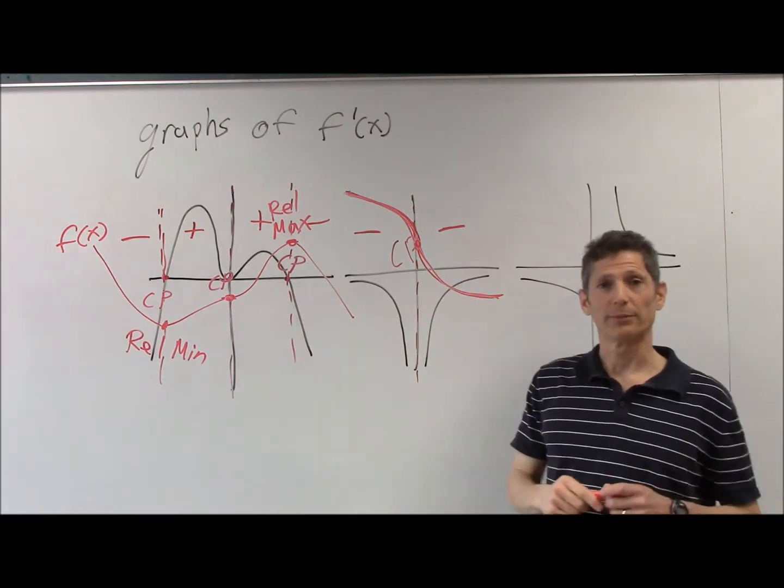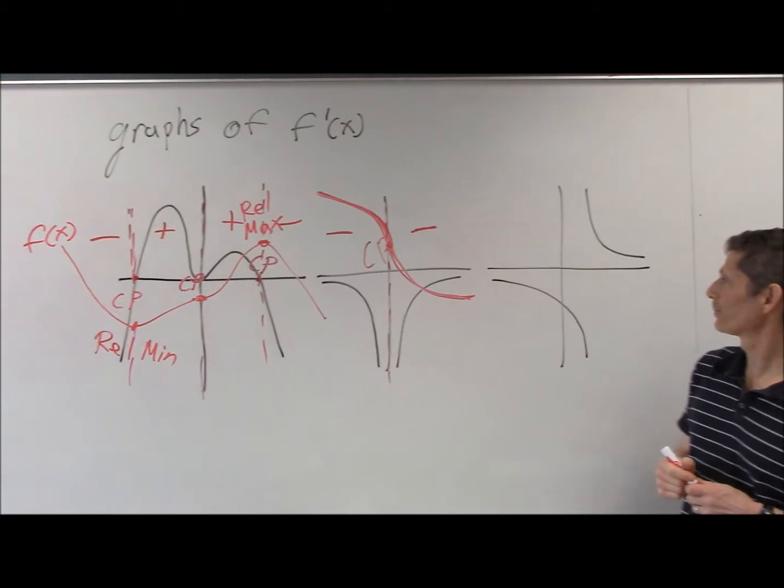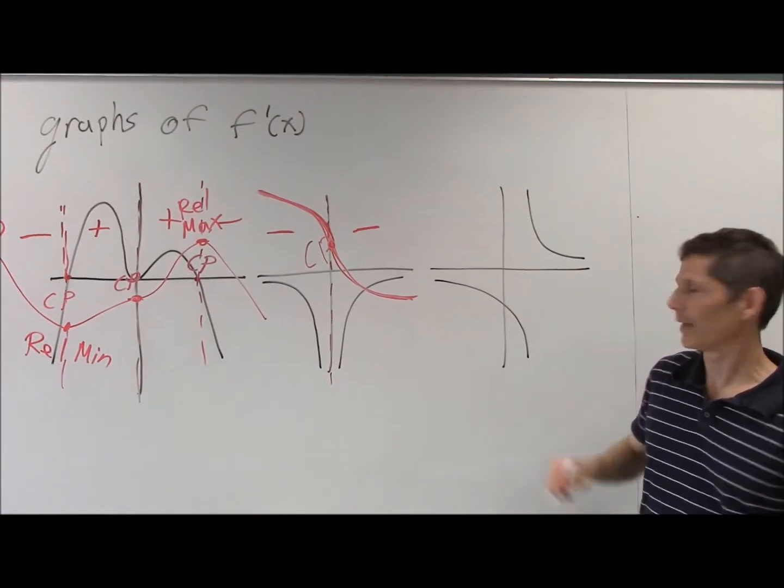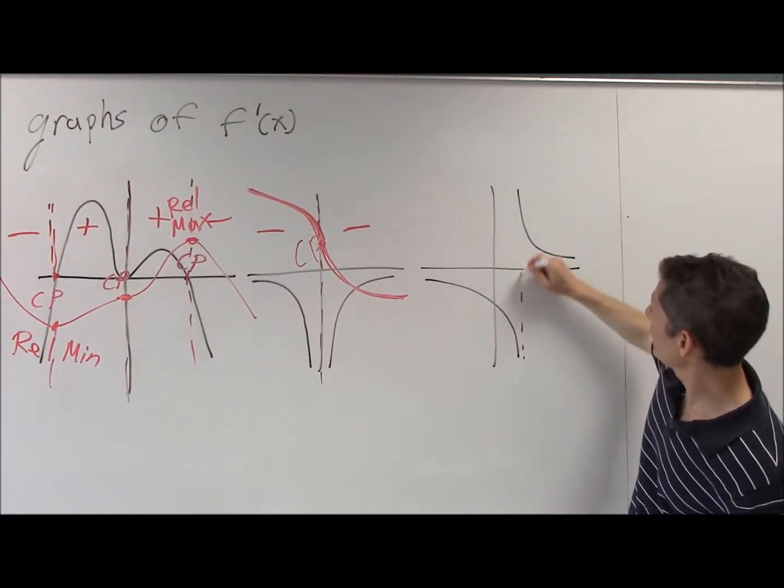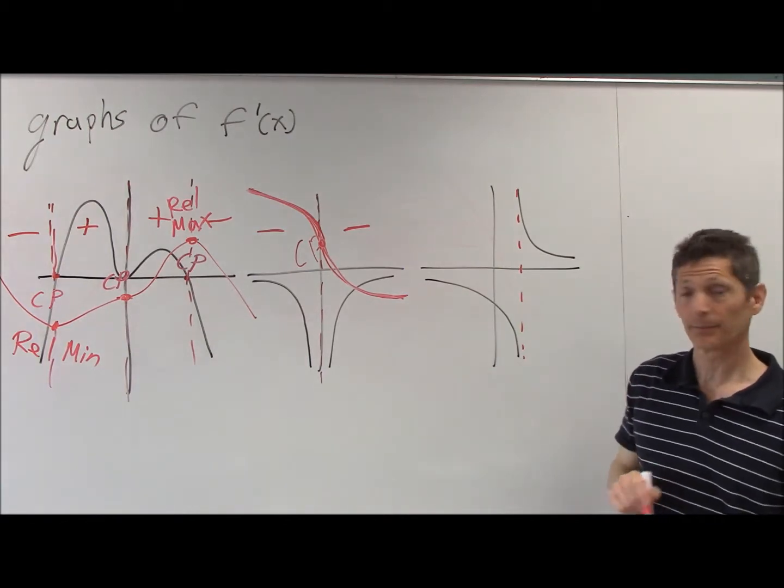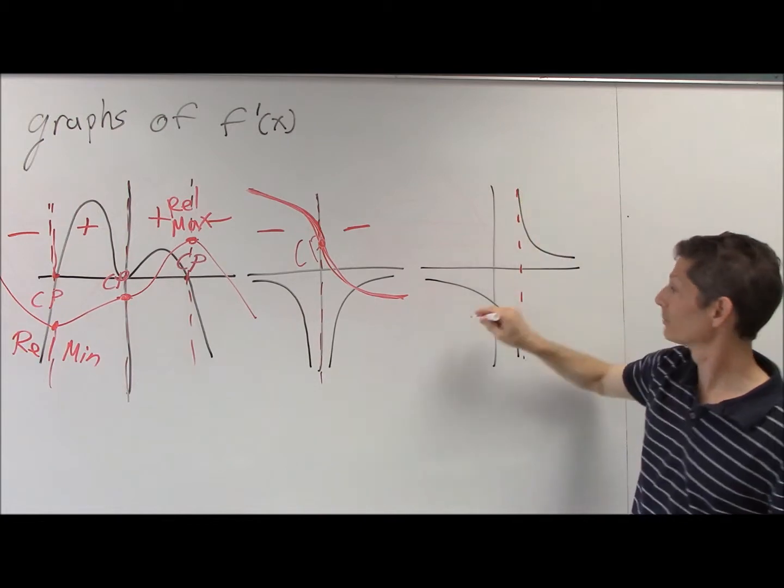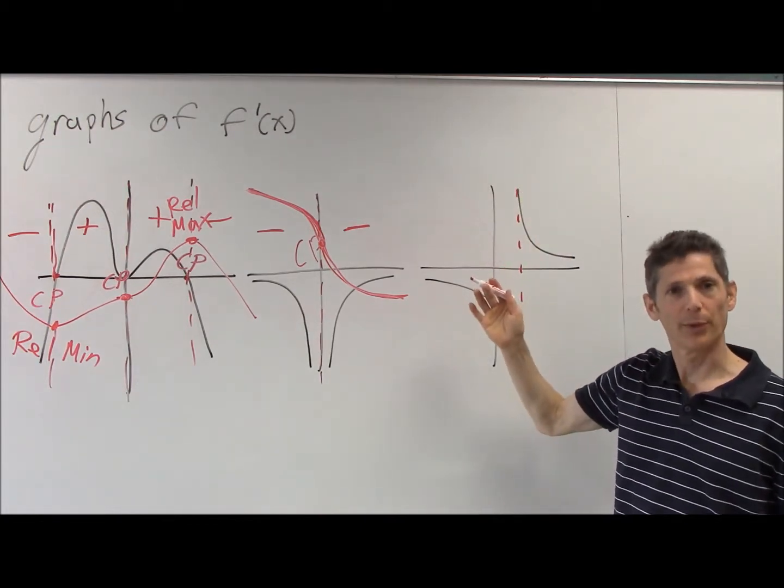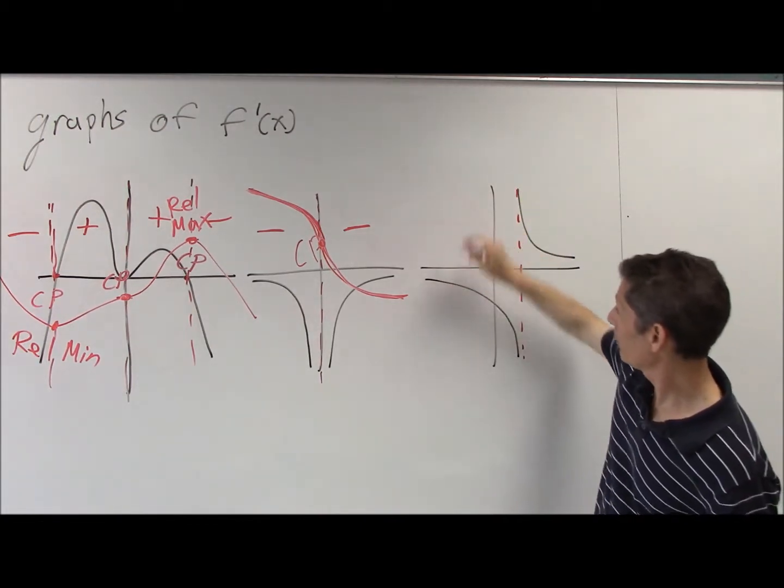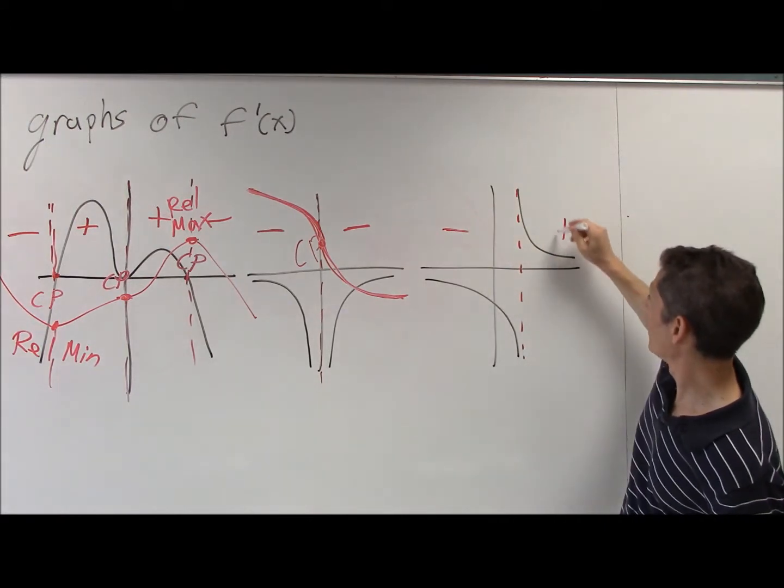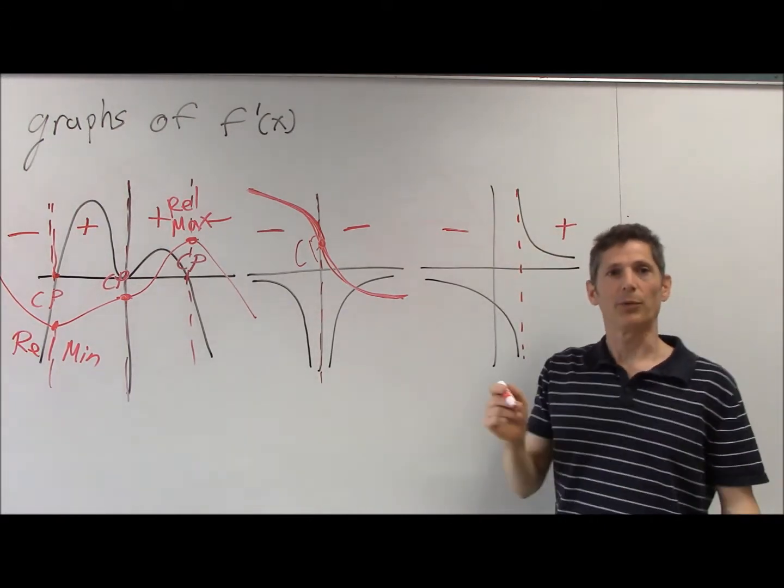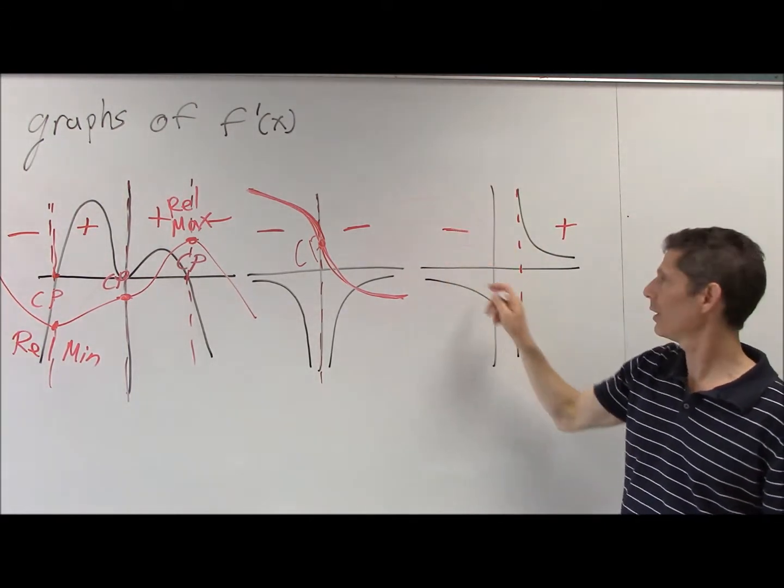And the last one, again, this is a place where the derivative is undefined. So a critical point must occur somewhere at this x value, and we're assuming that the function is defined for all x. Negative y value, positive y value. Oh, this is easy. It's a parabola, right? Downhill, uphill?